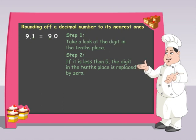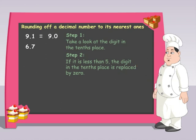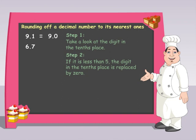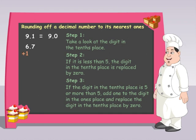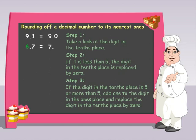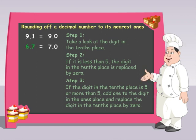Now let's look at 6.7. Since the digit in the tenths place is 7, which is greater than 5, 6.7 becomes 7.